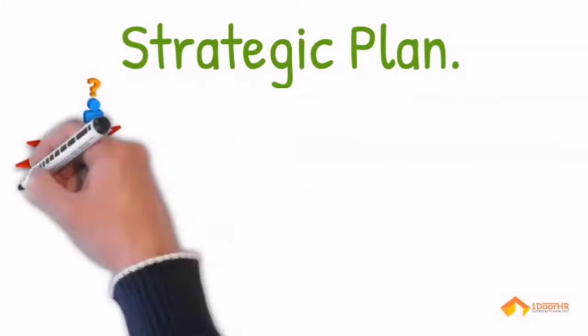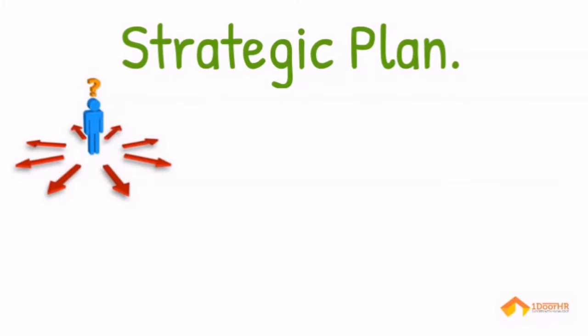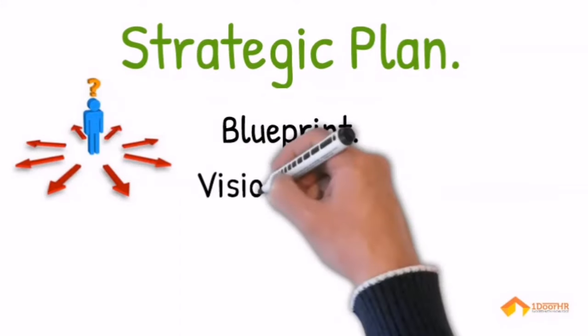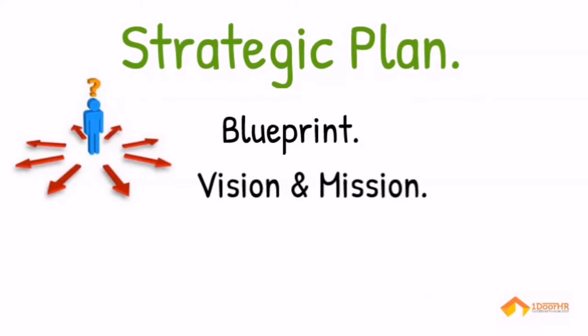The first one is strategic plan. It is a way of assessing a business: where you are, where you're going, and where you need to go. It is a blueprint of the organization's direction of business. It's a level where we define the vision and mission of the organization.